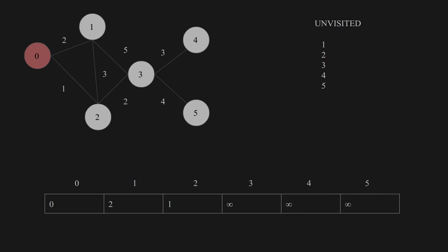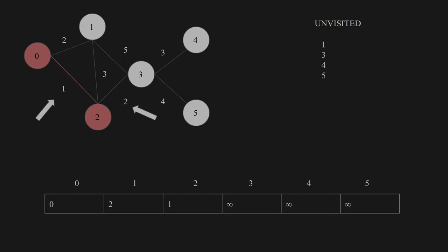Now let's look at the list of unvisited houses and see which house has the smallest distance — that will be house 2. So we visit house 2, take it off the unvisited list, and mark it red. I also mark the path red so we remember which path we took. The neighboring houses of house 2 are house 1 and house 3. For house 1, the distance via house 2 is 1 + 3 = 4 minutes, which is bigger than the existing 2, so we do not update. For house 3, it is 1 + 2 = 3 minutes, which is less than infinity, so we update the distance of house 3.